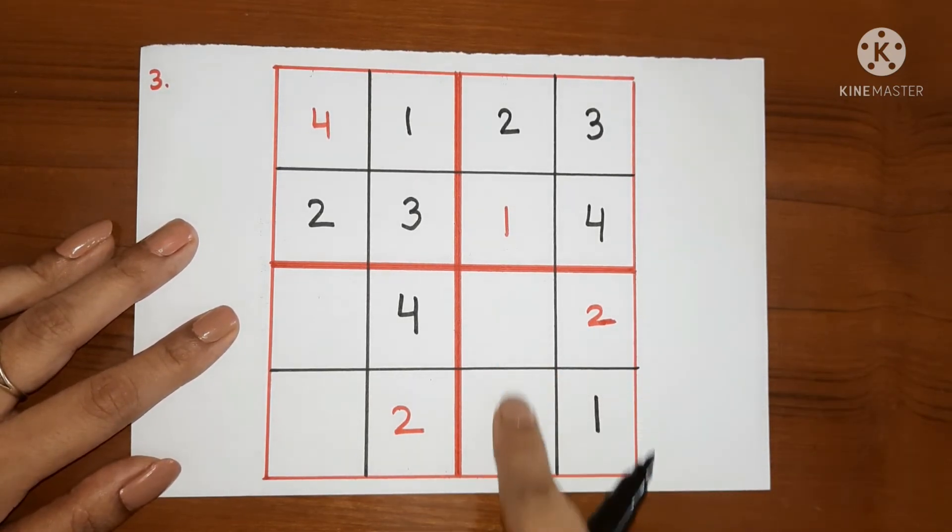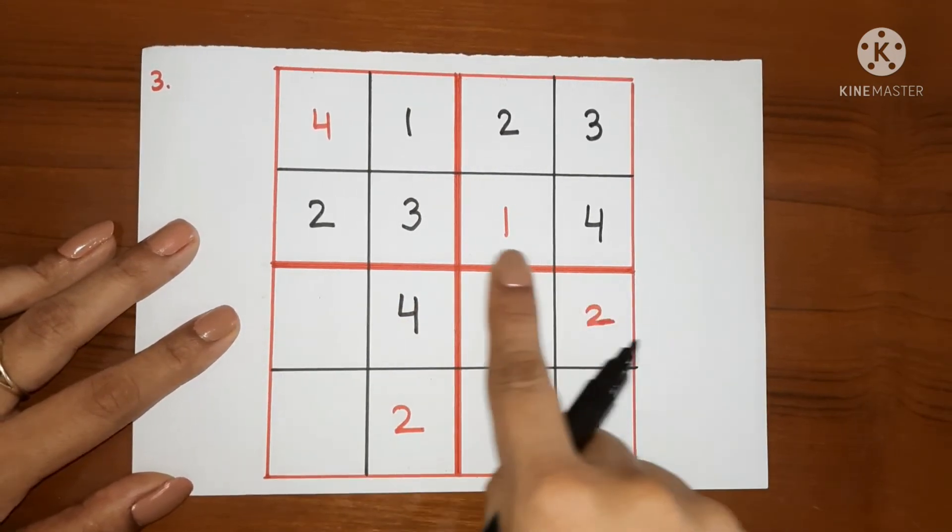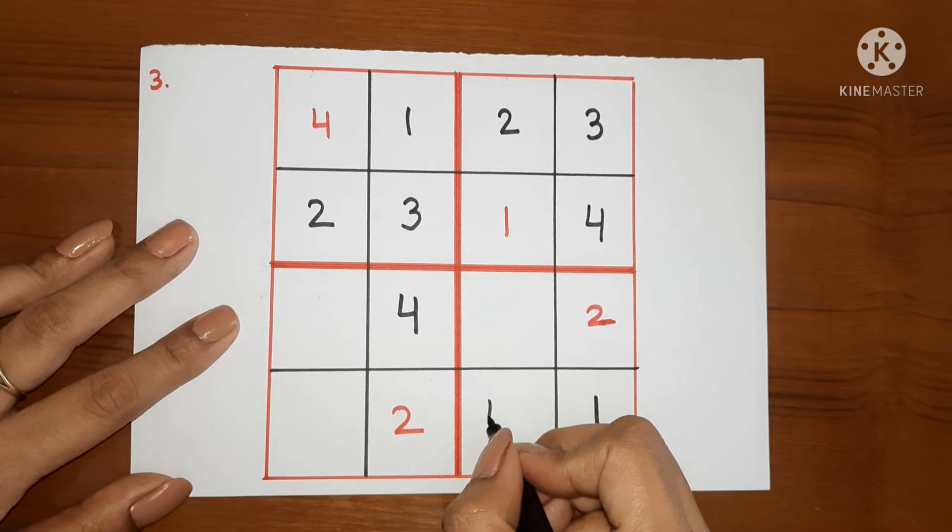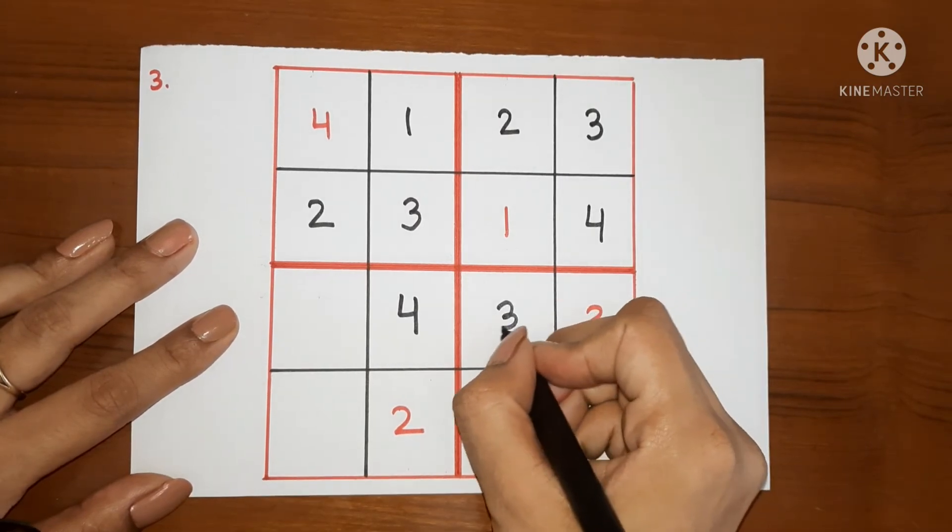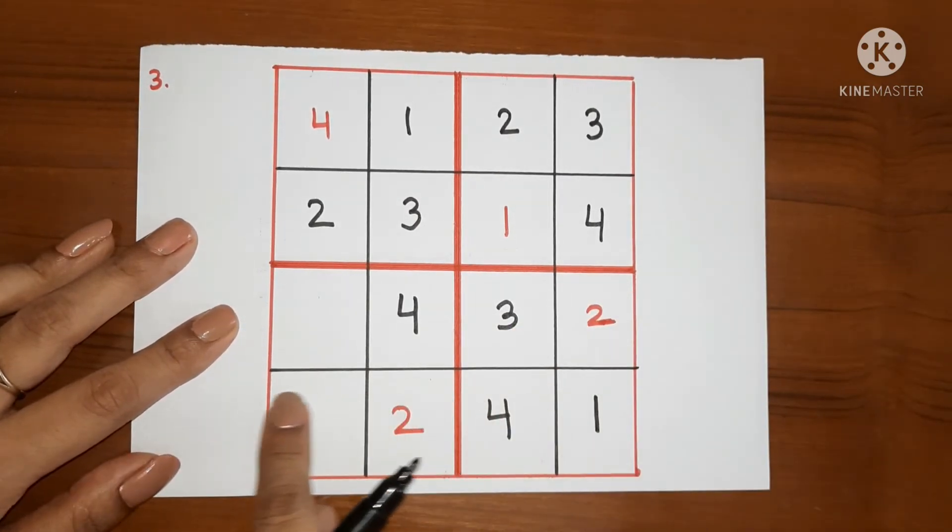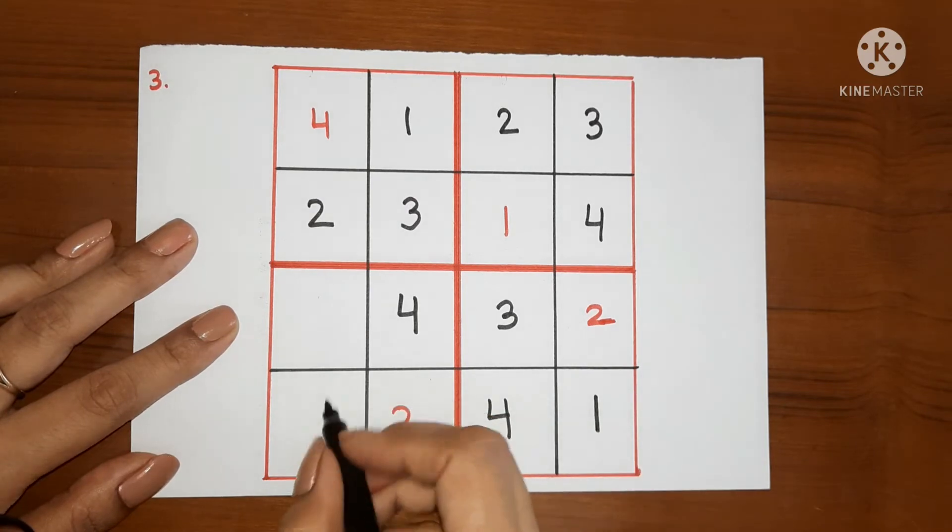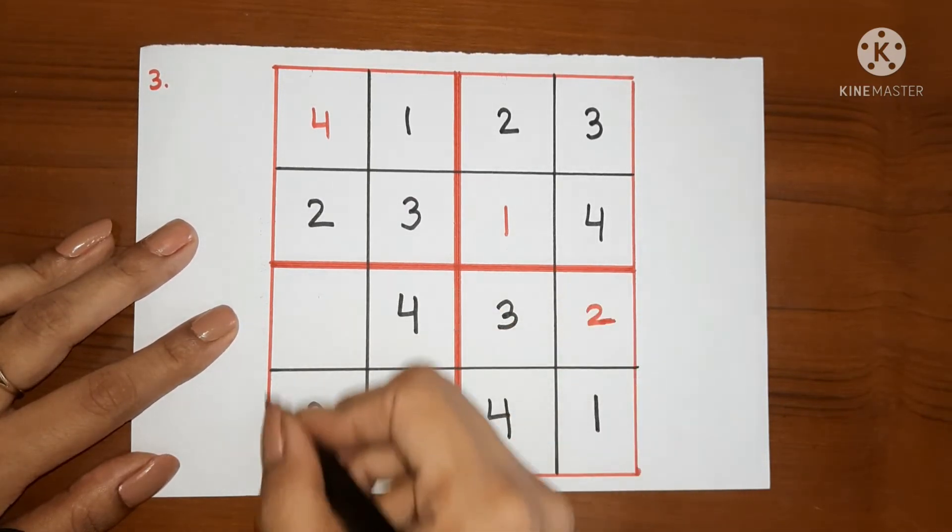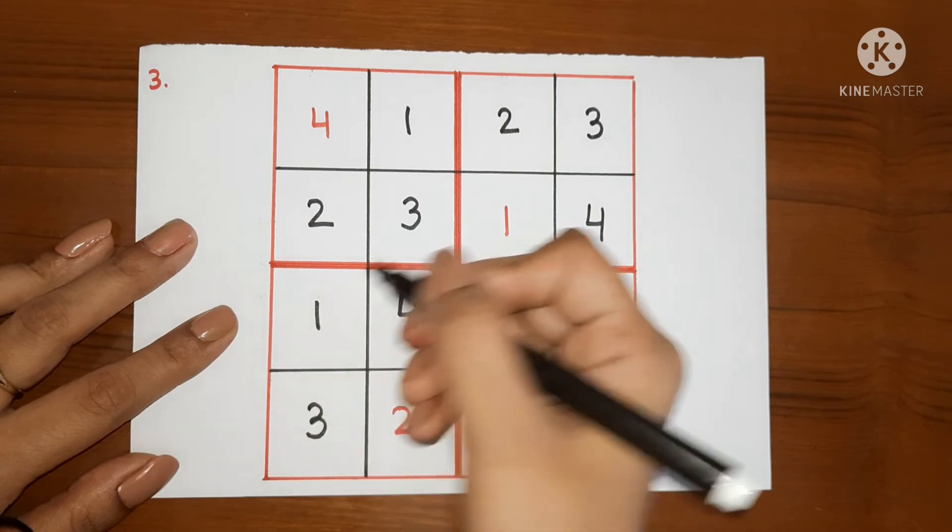Now, 3 and 4 are missing in this box. 4 is here. So we cannot write 4 here. We will write 4 here and 3 will come here. And this way, in this line, 1, 2, 4 are here. We have to write 3 and only 1 is missing in this box. We will write 1 here.